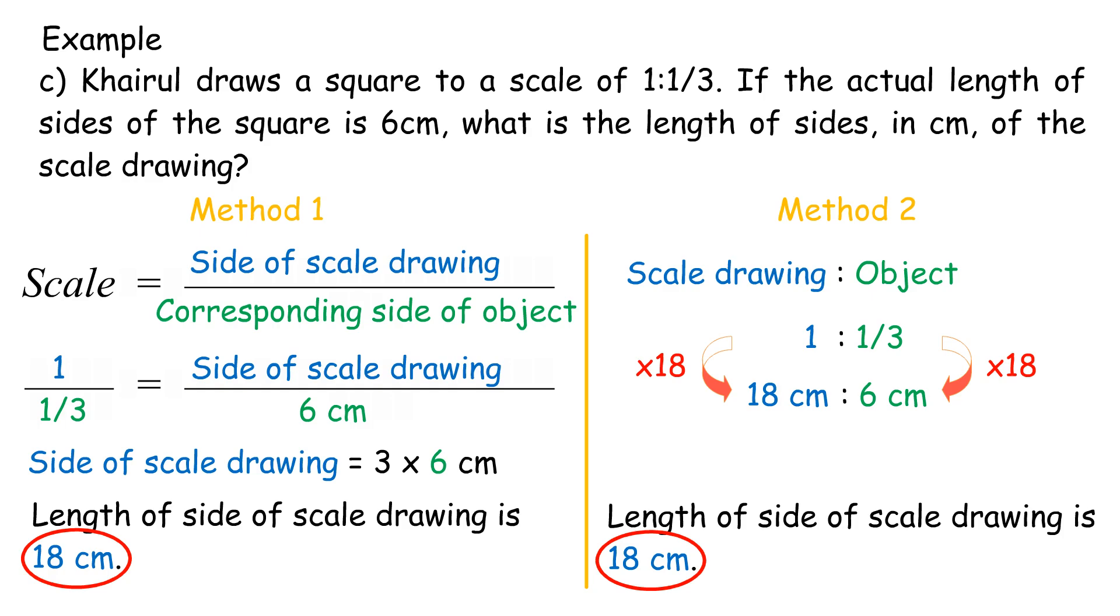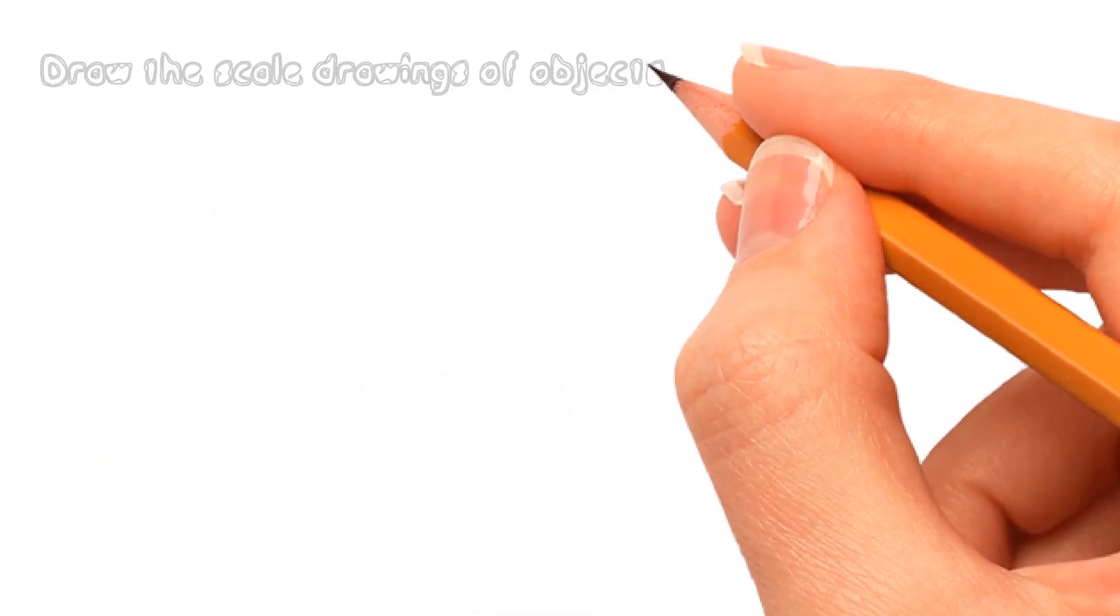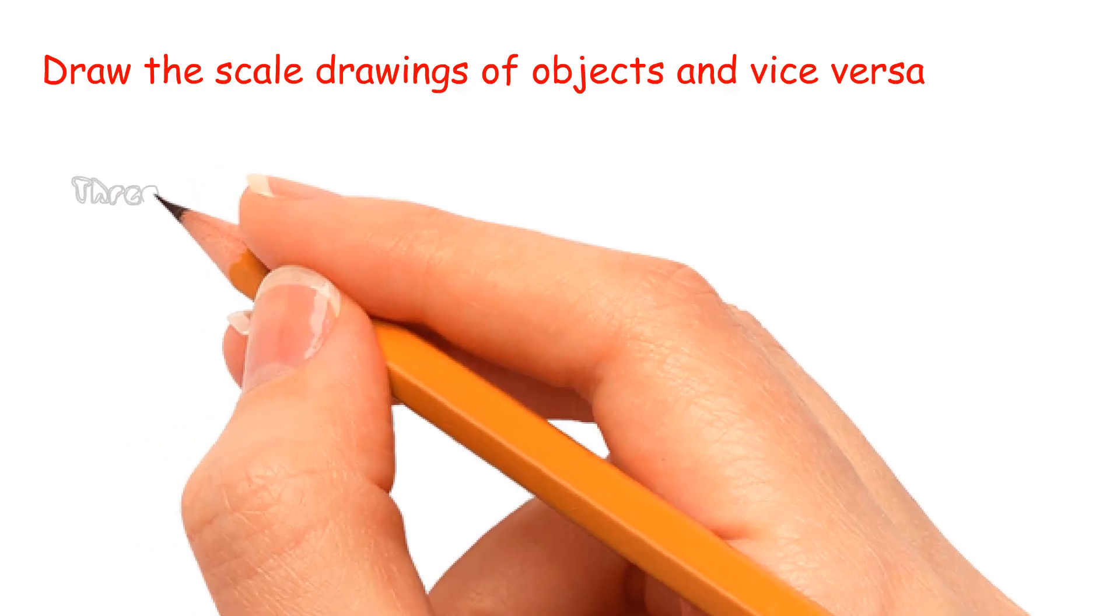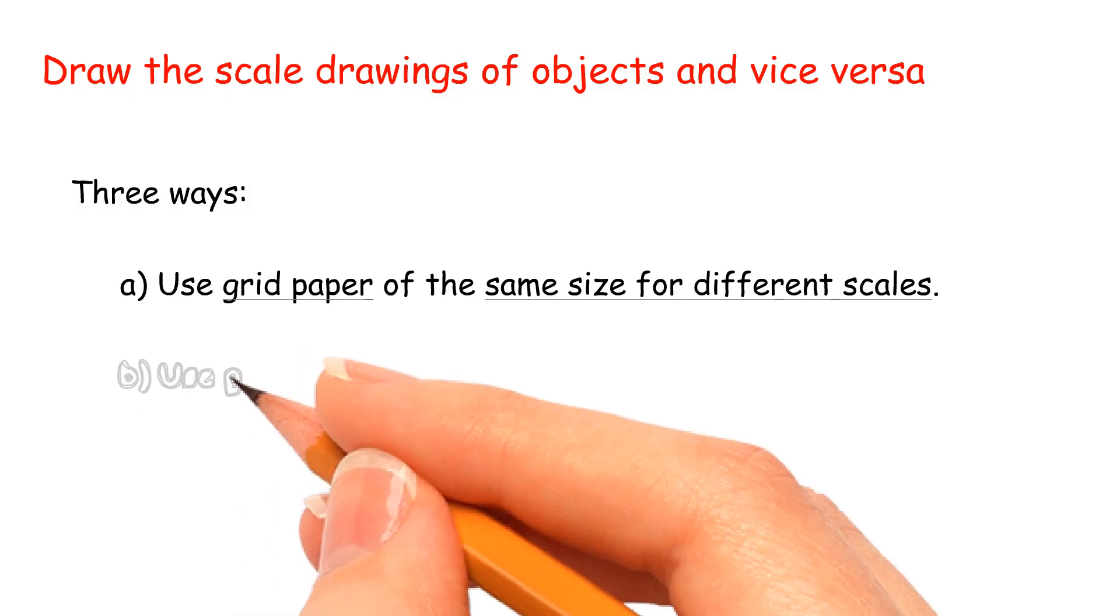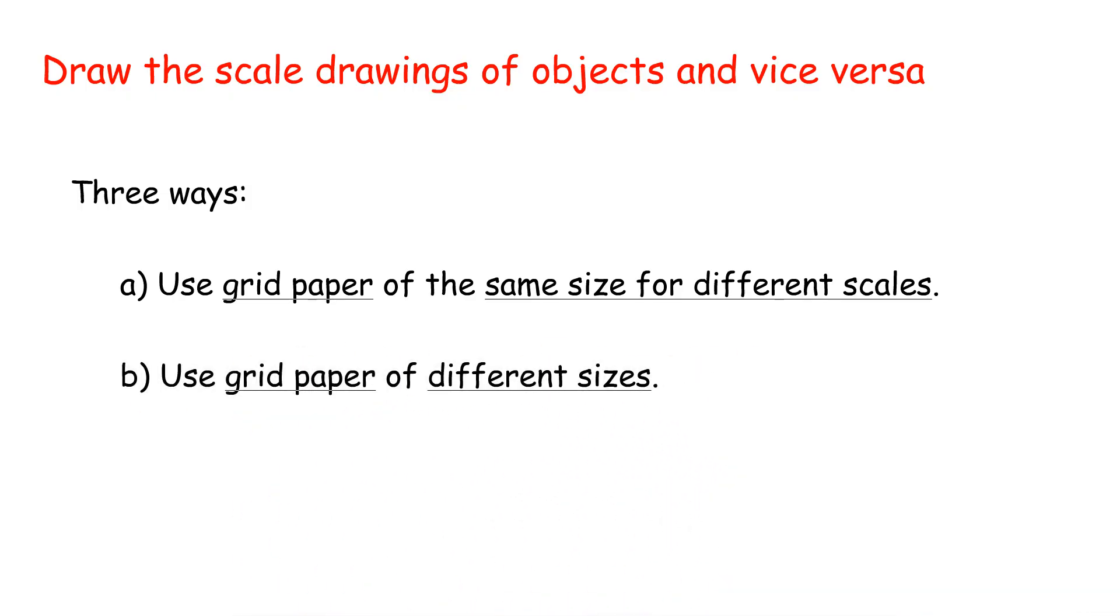Draw the scale drawings of objects and vice versa. Three ways: A, use grid paper of the same size for different scales. B, use grid paper of different sizes. C, draw on a blank paper according to the given scale.